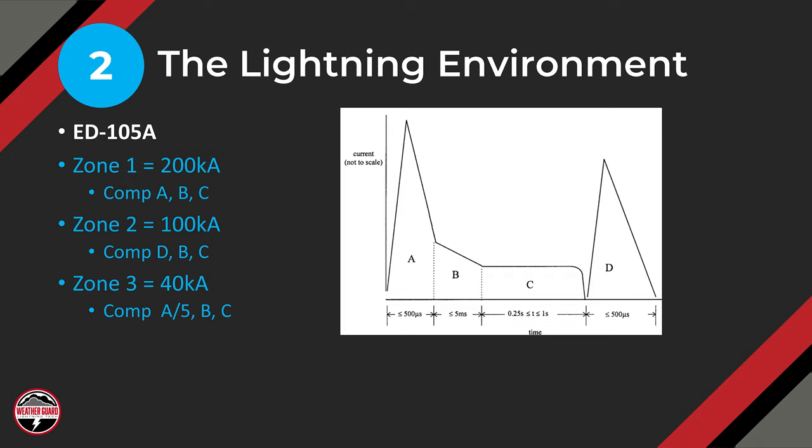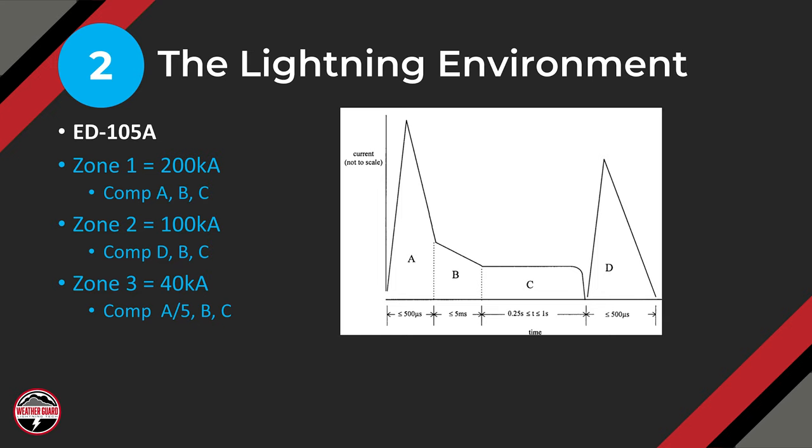Lightning Zone Three is a 40-kiloamp strike, which is components A or 5, B, and C. So the wingtips, nose, and tail extremities need to be designed to handle 200,000-amp strikes. The main body — the fuselage — needs to handle 100,000 amps in Zone Two. And those parts in Zone Three need to handle 40,000 amps.